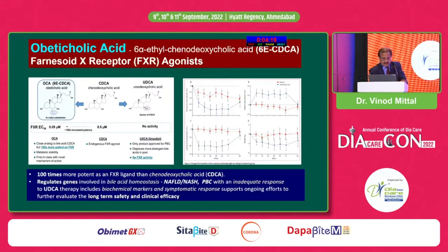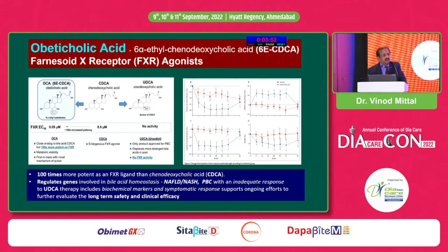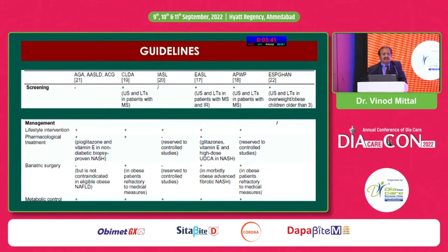Obeticholic acid is a new drug already available — it is a Farnesoid X Receptor (FXR) agonist. It is an anti-fibrotic and anti-inflammatory agent, 100 times more potent than chenodeoxycholic acid. It regulates the genes involved in bile acid metabolism and has already been approved for the treatment of NAFLD and NASH, with significant evidence supporting its role.